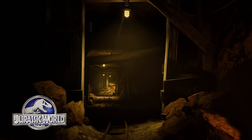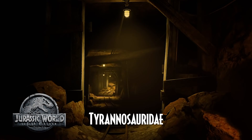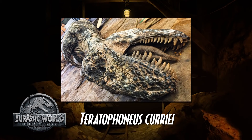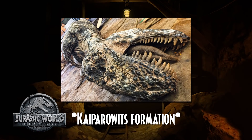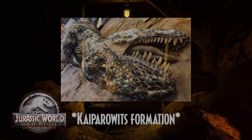As for the Jurassic World trilogy, there have been a couple of additions to the family of Tyrannosauridae. Starting with Jurassic World: Fallen Kingdom, we are introduced to Teratophoneus curriei, a medium-sized tyrannosaur from the Kaiparowits Formation in the United States. It appears only as a mangled corpse next to the abandoned radio tower, although it was originally supposed to appear in the stampede before being replaced by a juvenile Allosaurus.